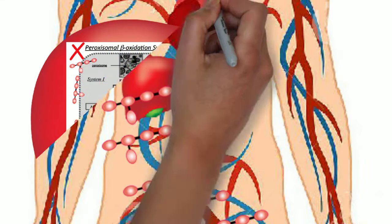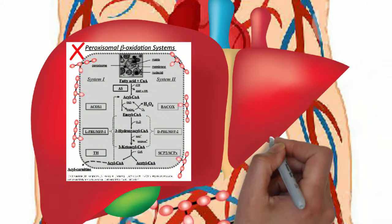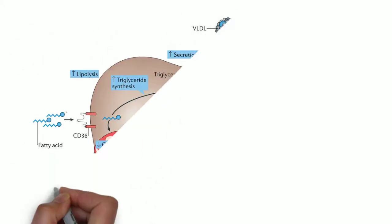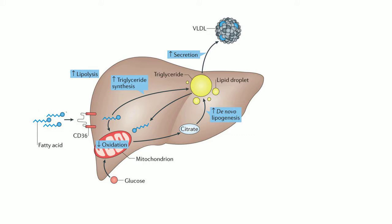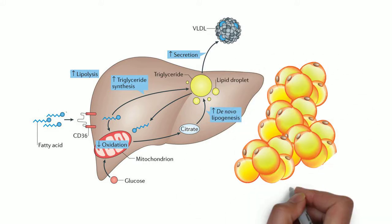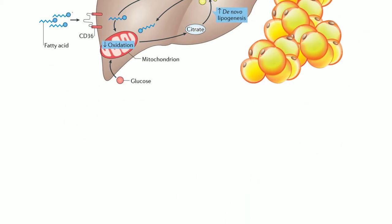In the liver, LPS decreases peroxisomes, whose job is to break down fatty acids. This causes hepatic de novo lipogenesis, leading to increased adiposity.